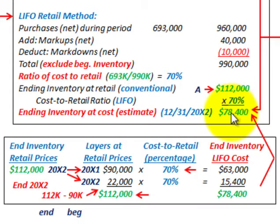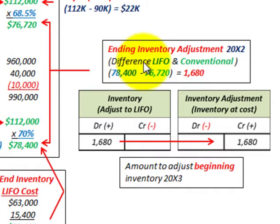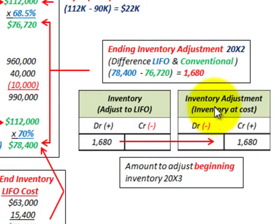Now let's look at the adjustment we need to make. The LIFO ending inventory is $78,400 and the conventional ending inventory is $76,720, giving a difference of $1,680. We debit inventory for $1,680 to adjust it up to the LIFO amount, and credit an inventory adjustment account for $1,680. This is the year-end adjustment to record the change from conventional to LIFO.